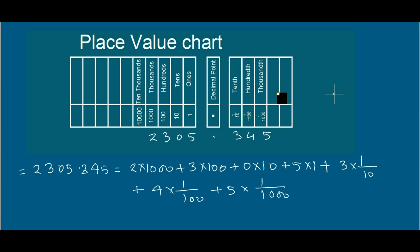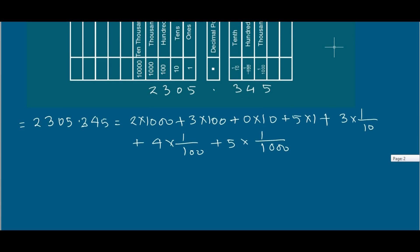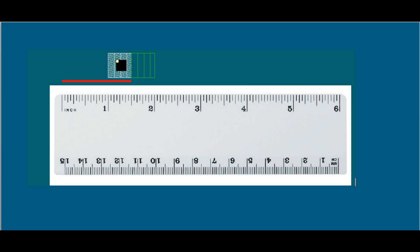Now I will show you what is the need of the decimal part, and why decimal numbers are needed. I will show you how to measure a line and what is the use of a decimal number. Every time, any line or any object will not be equal to a whole number.